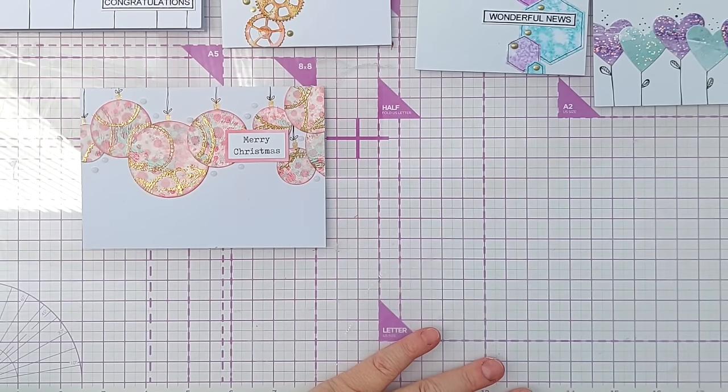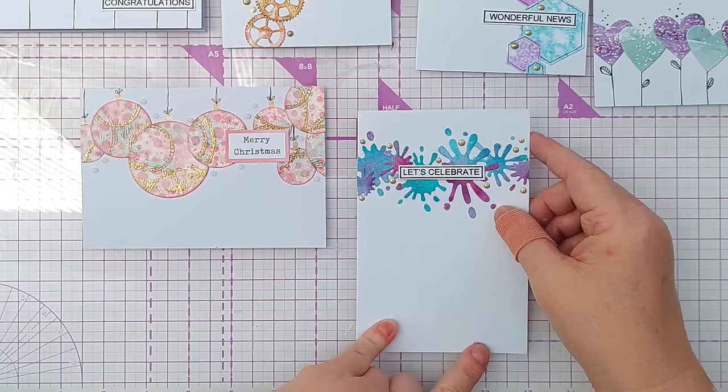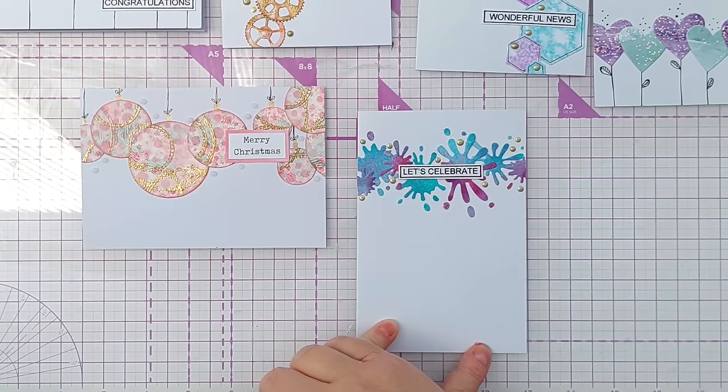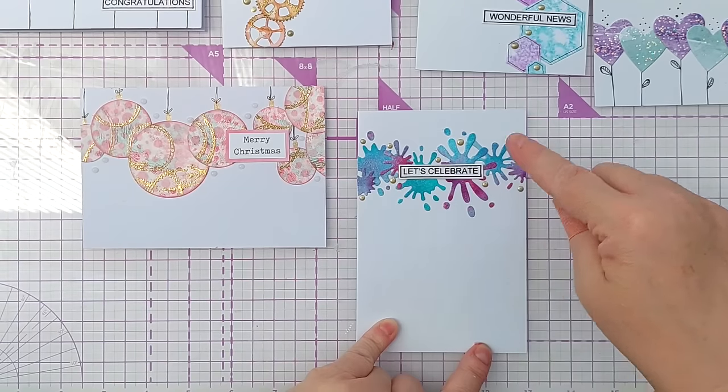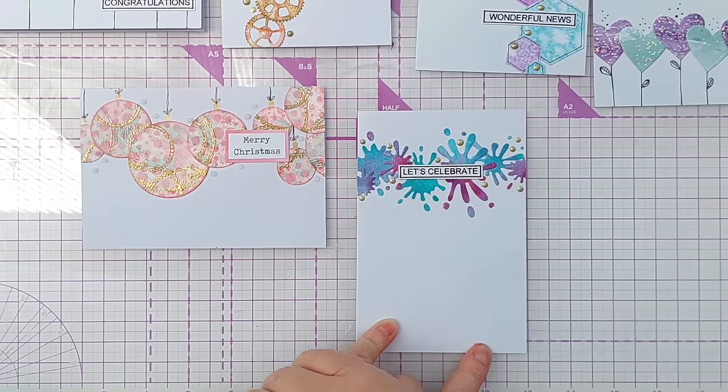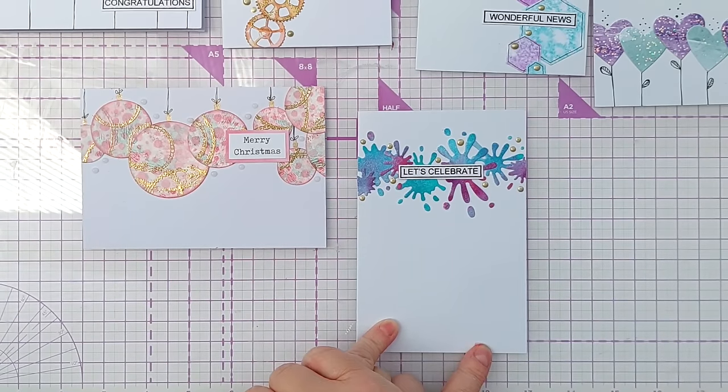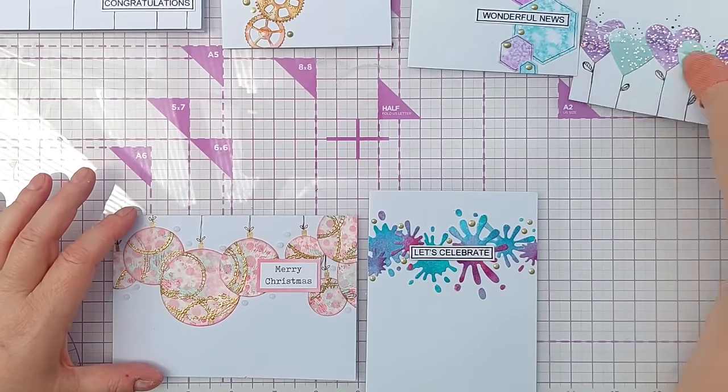And then for my last card we went portrait again. And I die cut some splats out of another background. And arranged them horizontally bouncing up and down. Added the Nouveau drops and a sentiment on top. So there we have six cards.